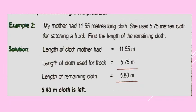Now see here the problem is based on subtraction, so try to understand the concept first. My mother had 11.55 meter long cloth. She used 5.75 meter cloth for stitching a frog. Find the length of the remaining cloth. Here the total cloth is given and the cloth used for stitching a frog is given, and we have to find the length of the remaining cloth. So naturally we have to do subtraction here, not addition.